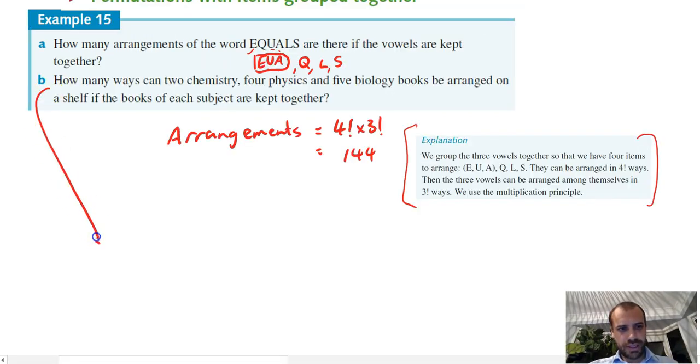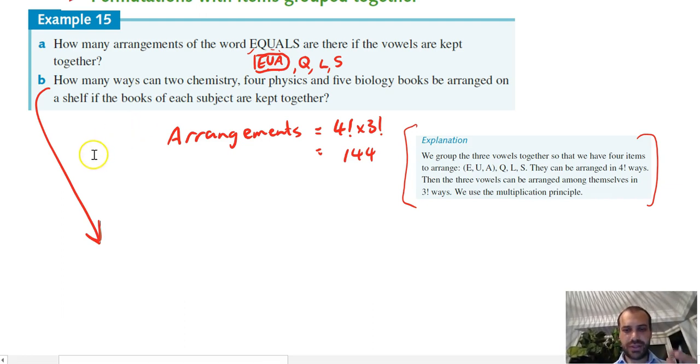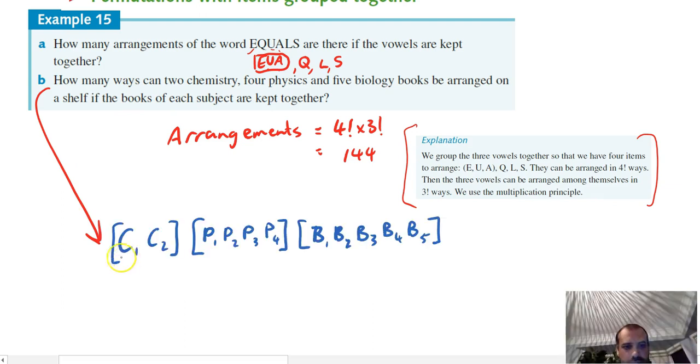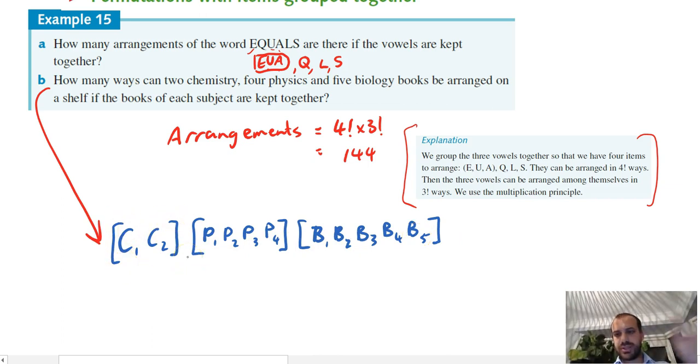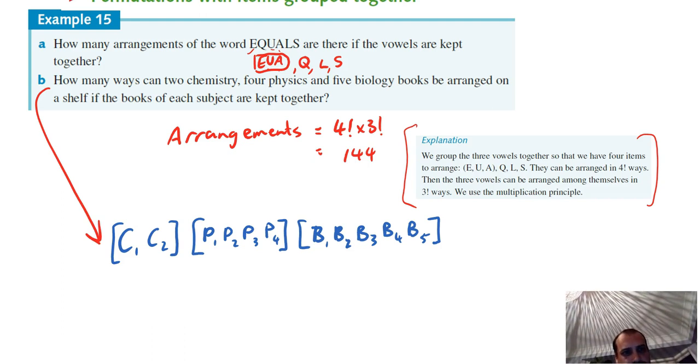This next question here really kicks it up a notch. It says: how many ways can two chemistry, four physics, and five biology books be arranged on a shelf if the books of each subject are kept together? So let's look at the books. First of all, two chemistry books, there's four physics books, and there's five biology books. And I've put them in their little brackets here because I'm treating them as single units, right? So I've got three objects there, so the way to arrange three objects is just 3 factorial, which is 6. So let's write in our arrangements - arrangements equals...